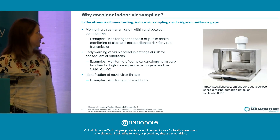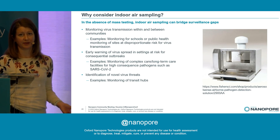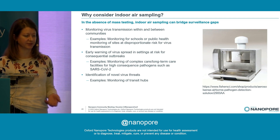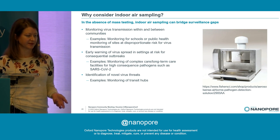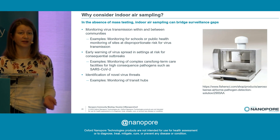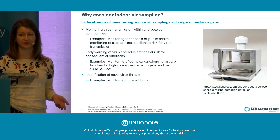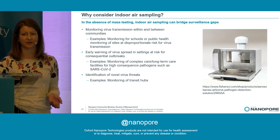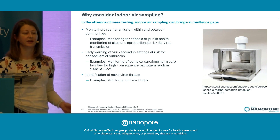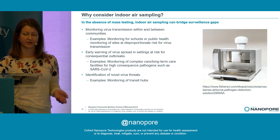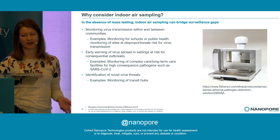So why might we consider indoor air sampling? This could help bridge those surveillance gaps — more generalizable to the general population for variant tracking. You can imagine deploying air samplers in schools and getting a snapshot in time of what kinds of viruses, not even just SARS-CoV-2 but other viruses as well, might be circulating in the community. There are also places where an outbreak would be really high consequence, such as a long-term care facility, where you might have a lot more morbidity and mortality, and so this could be useful for identifying an outbreak early and starting mitigation strategies.